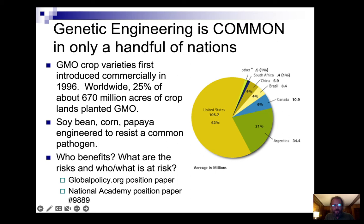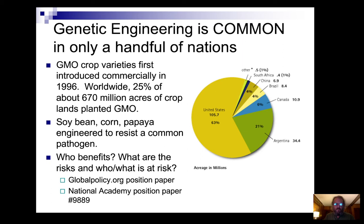This is an old graph I need to update, but what it's trying to show is that this is a USA-dominated situation. Most of the world is not really on this side. The acreage that grows GMO crops throughout the world — almost two-thirds of it is found in the United States.